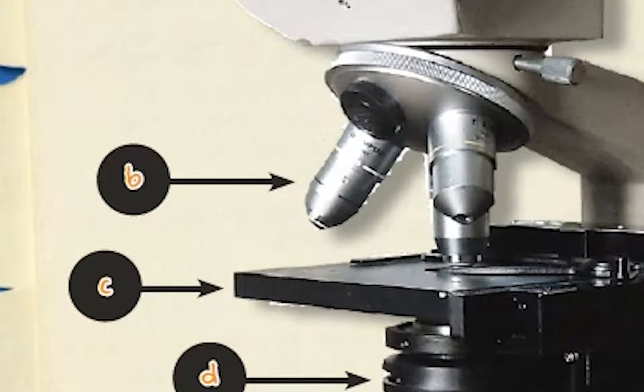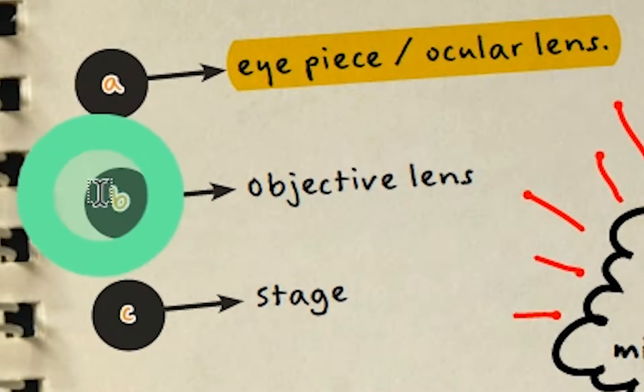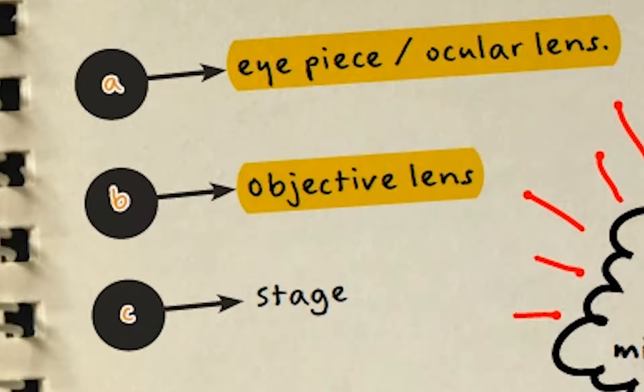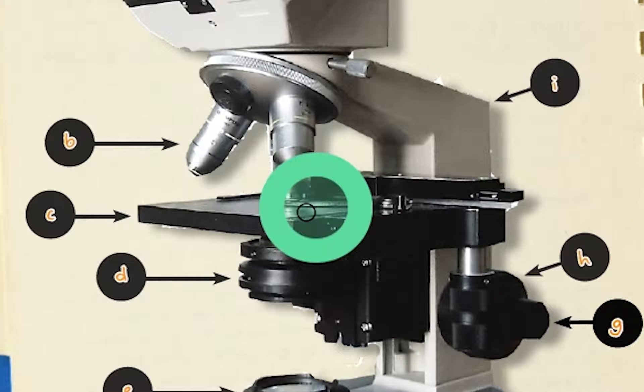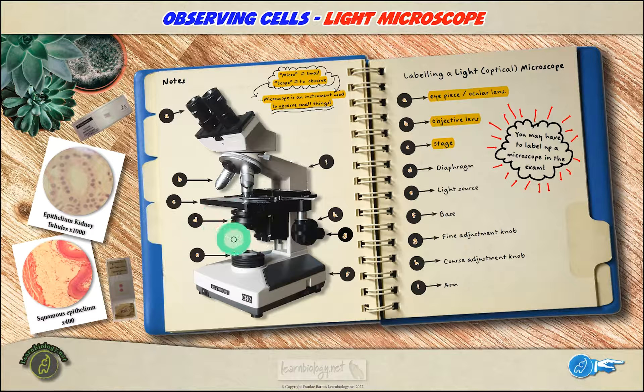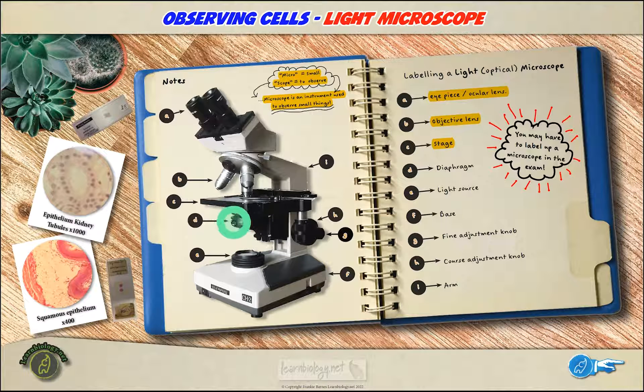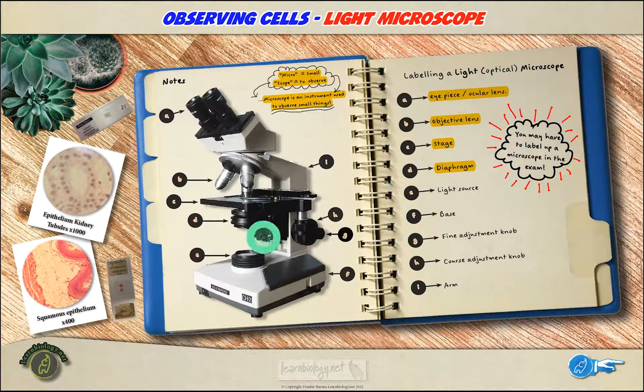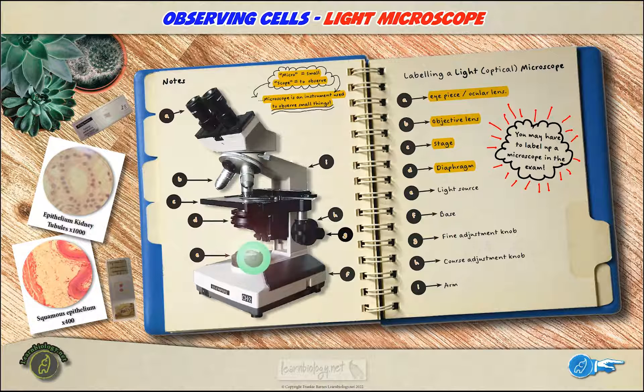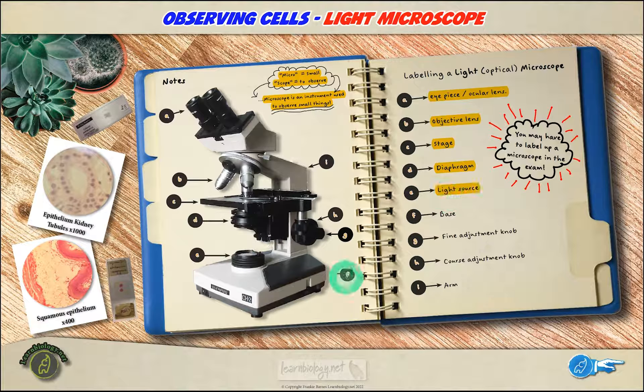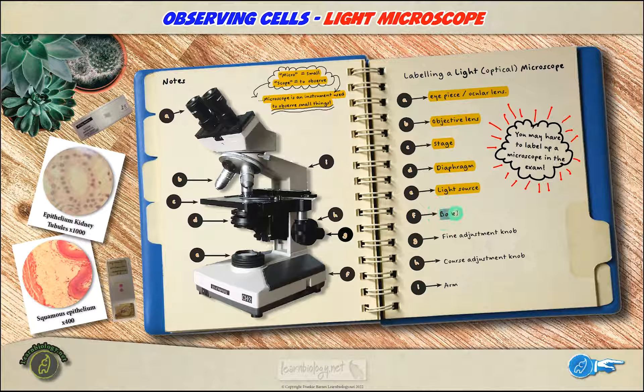At B we have the objective lens, and it is the objective lens that is the closest thing to the sample and it's going to magnify the specimen that you're observing. At C we have the stage, so this is where you're going to place that sample. Sometimes you'll see these little clips on the microscope to hold your slide in place while you have a look around. At D I have the diaphragm. Now this is beneath the stage, there's got a little dial on it so that you can focus a beam of light through the sample so that you can see the sample more clearly. At E we have our light source, so we're going to switch the microscope on and illuminate our specimen. Here at F the microscope has a nice solid base on which it stands.